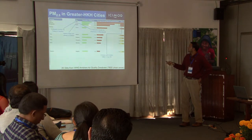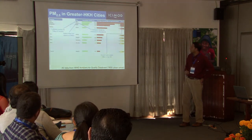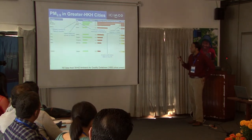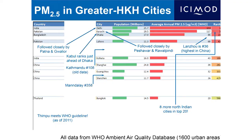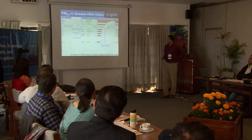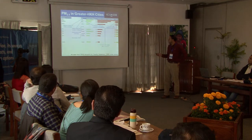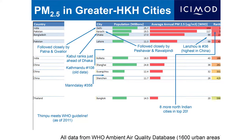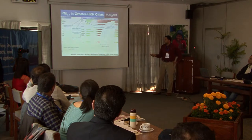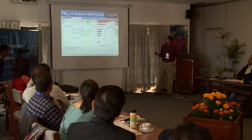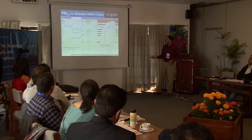Kabul ranks just ahead of Dhaka with a concentration of around 85 to 90 micrograms per cubic meter. The most polluted city in China in this database was Lanzhou, also in the greater HKH region. Kathmandu, based on older data, ranked 108th at 50 micrograms per cubic meter. Mandalay was the most polluted city in Myanmar at 30 micrograms per cubic meter. And Thimphu in Bhutan was actually meeting the WHO guideline with just under 10 micrograms per cubic meter in 2011.